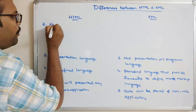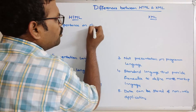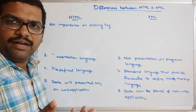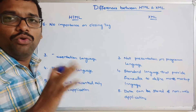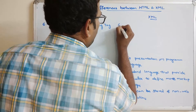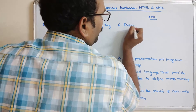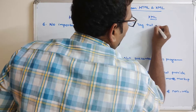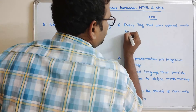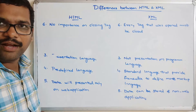In HTML there is no strict importance on closing tags — for every tag it is not required to close it. But in XML, every tag that is opened must be closed. So closing tags are mandatory in XML.